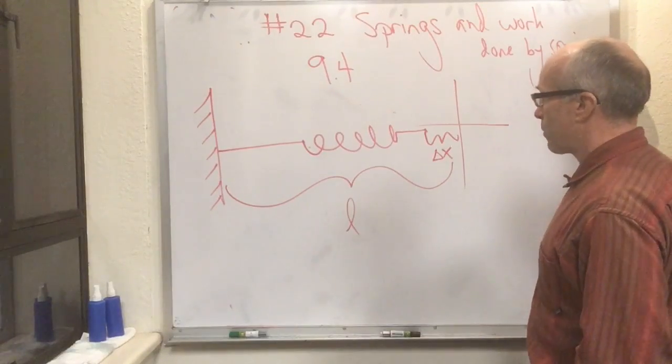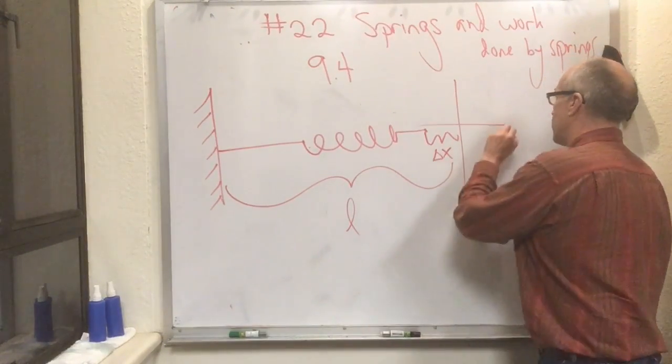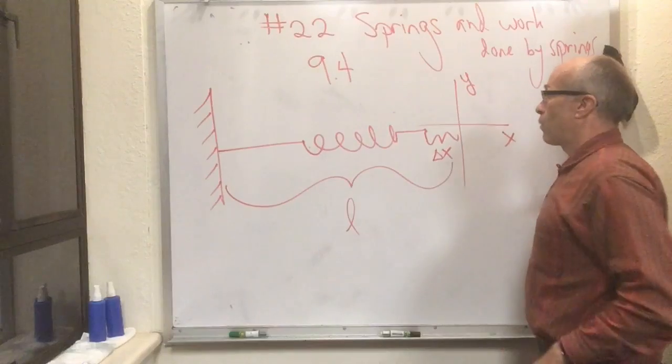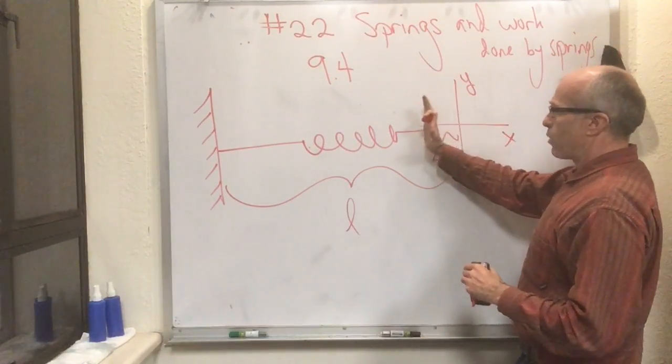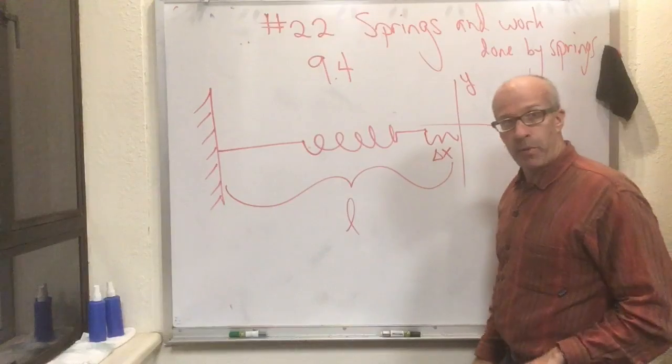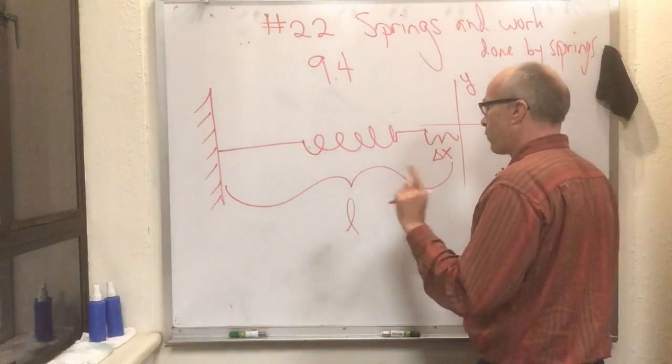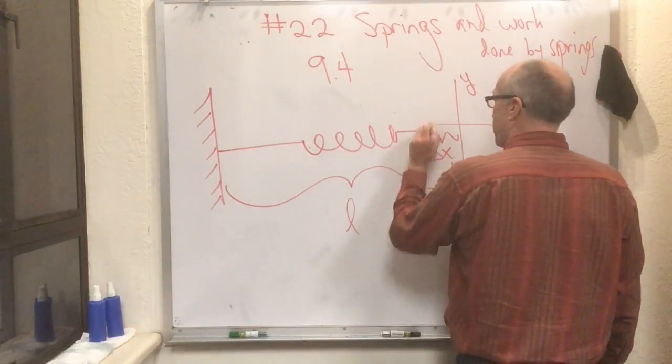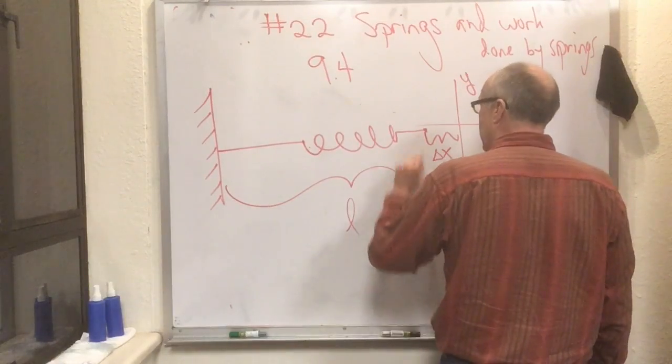Since I've moved in the leftward direction, delta x actually represents a negative number. If I compress the spring a little bit, it's going to push back on me, so the force produced by this spring is going to be positive.